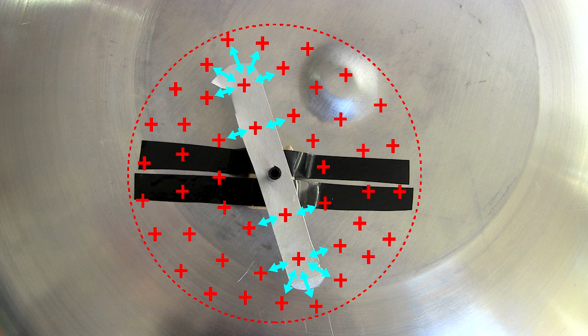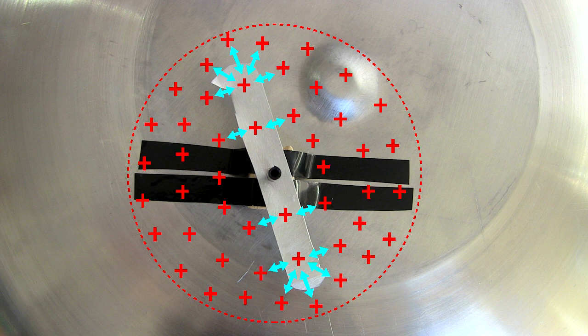This problem didn't occur with the big Van de Graaff generator because the shape of the dome, being even all around below the rotor, meant the repulsion forces were also even.